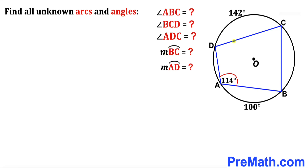Welcome to PreMath. In this video we have got quadrilateral ABCD inscribed in a circle, such that angle BAD is 114 degrees, the measurement of arc CD is 142 degrees, and the measurement of arc AB is 100 degrees. We are going to calculate the missing angles ABC, BCD, and ADC, and also the missing arcs BC and AD.